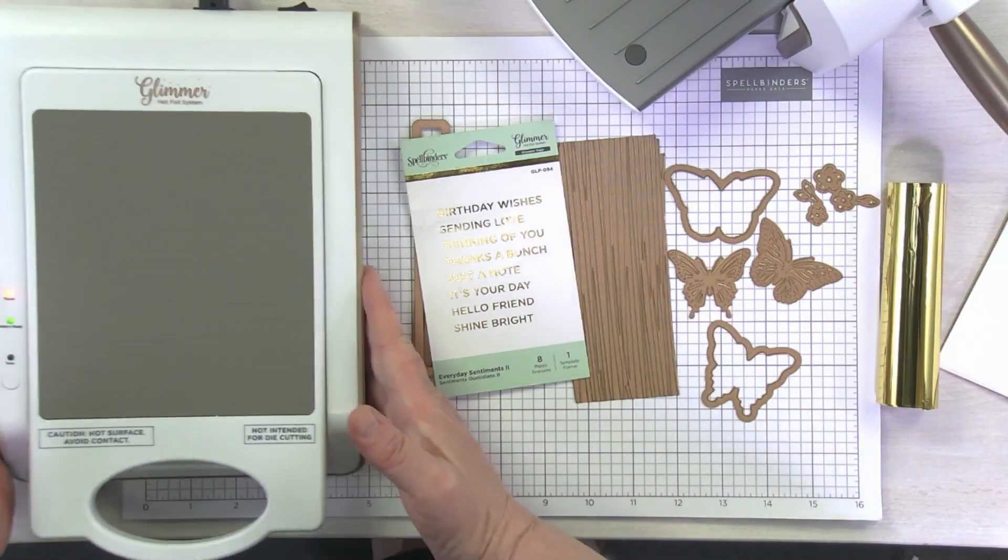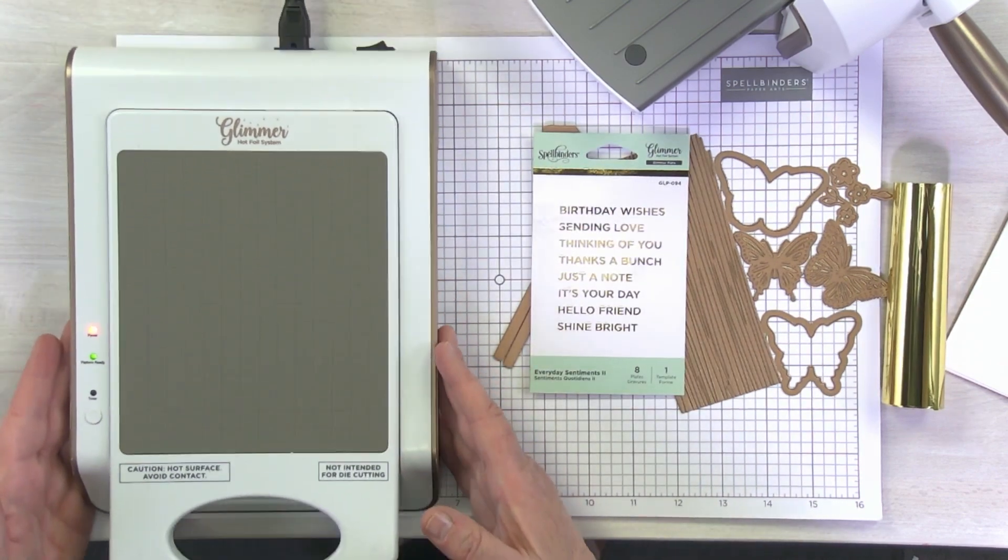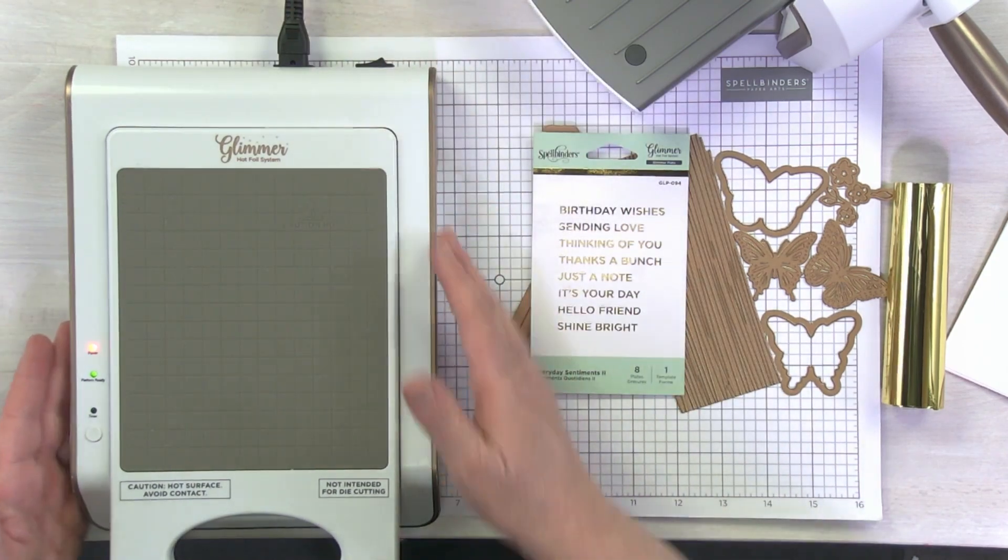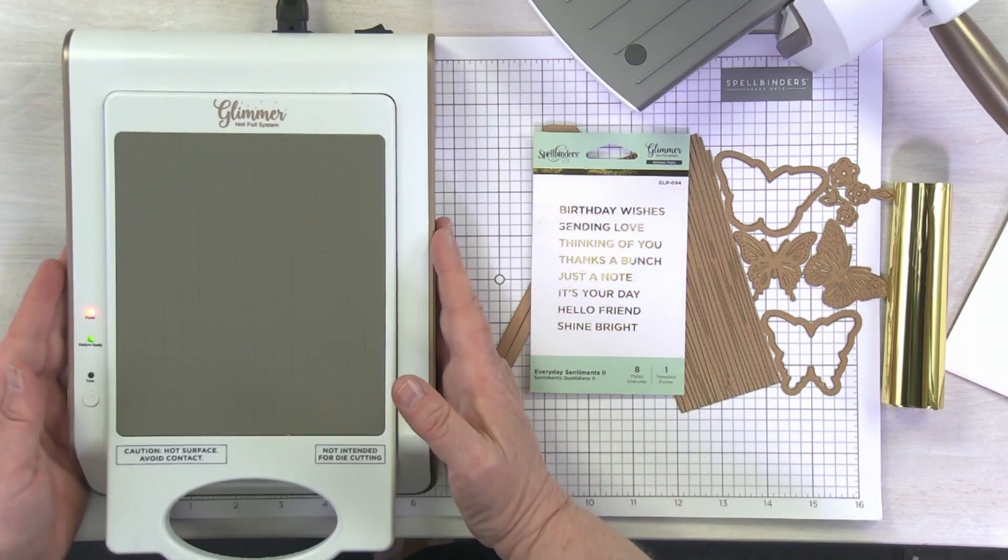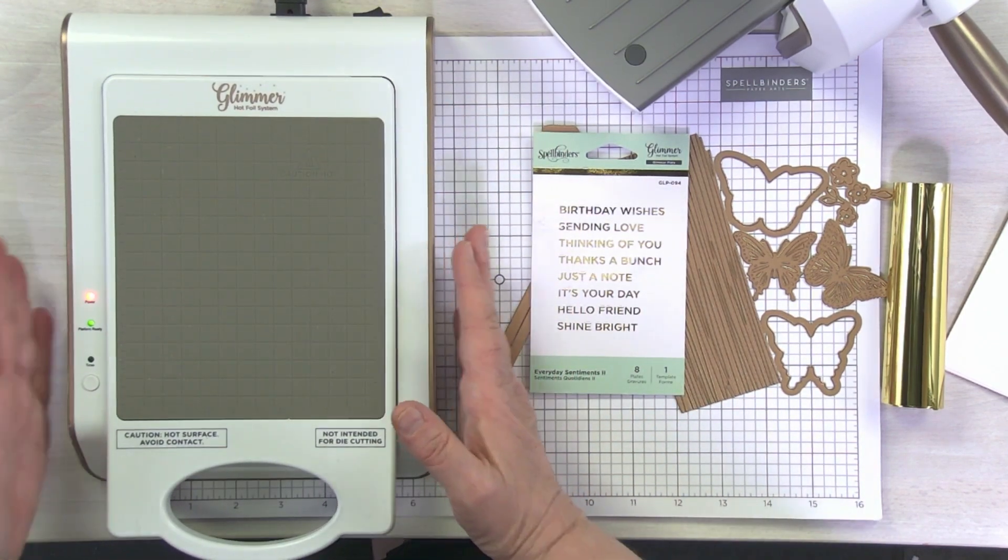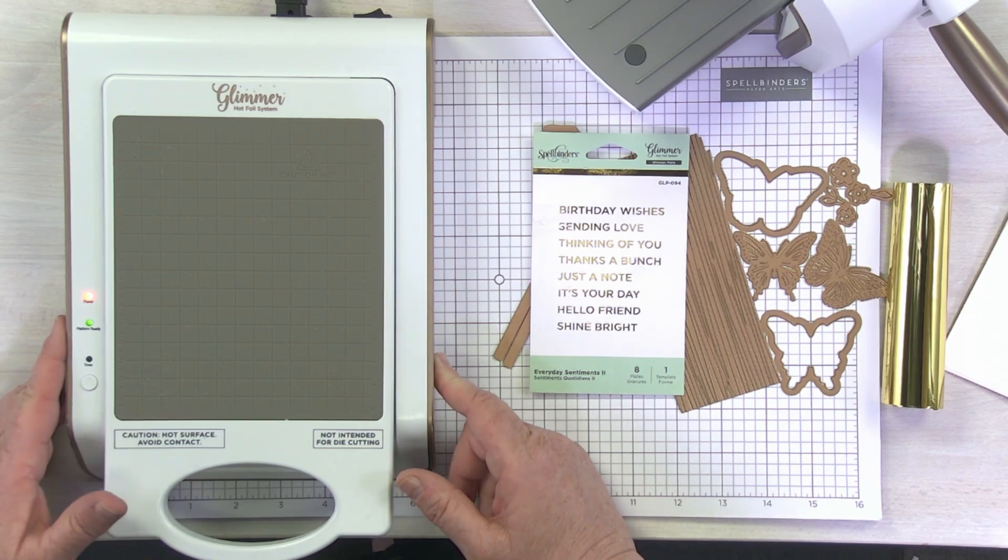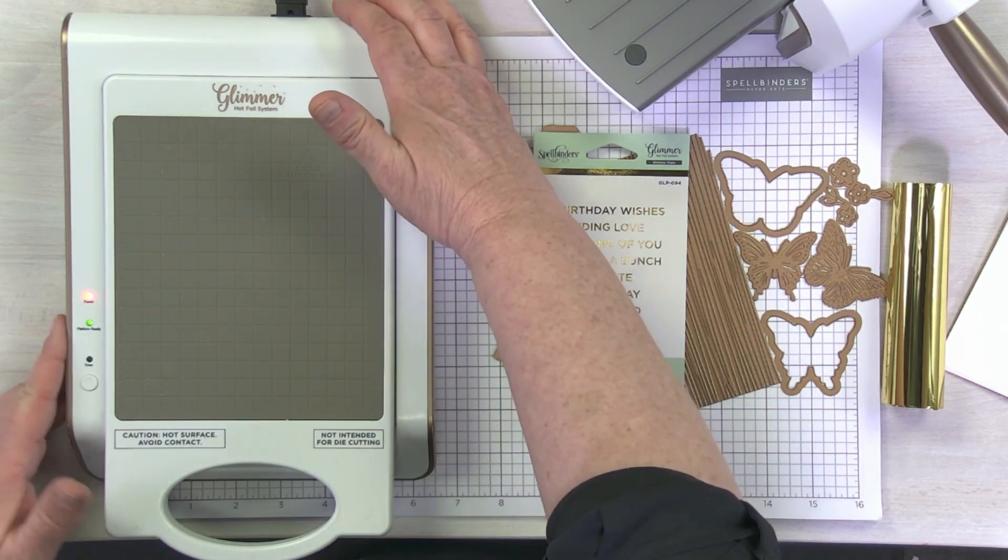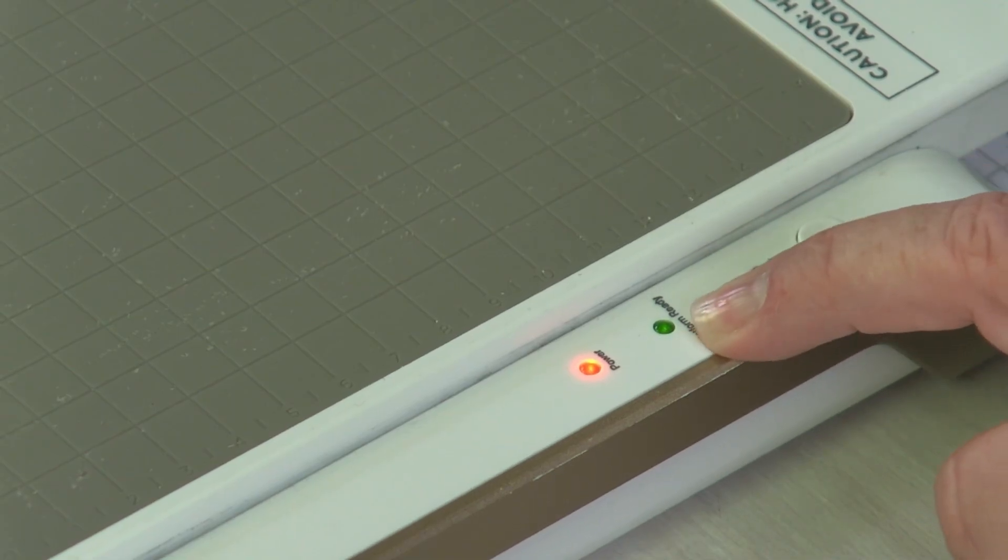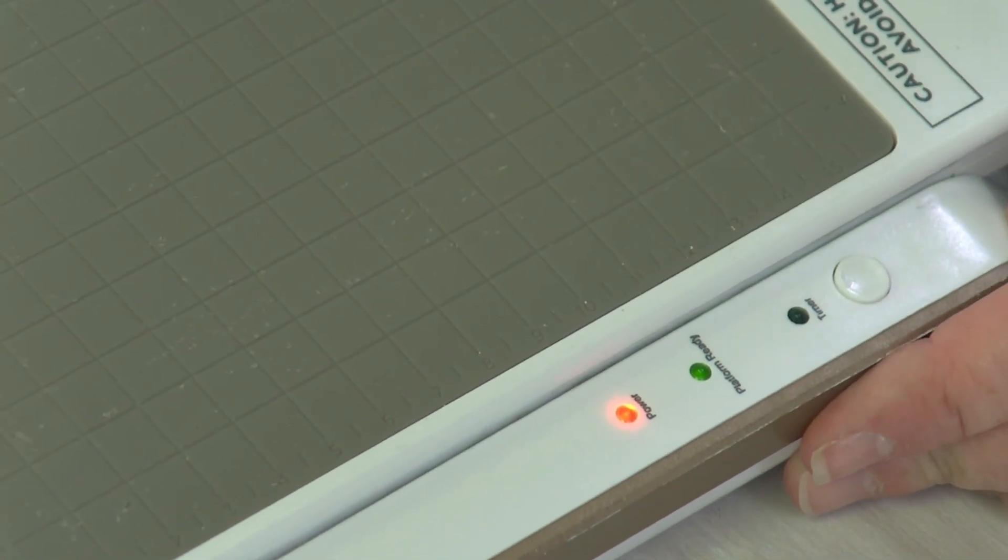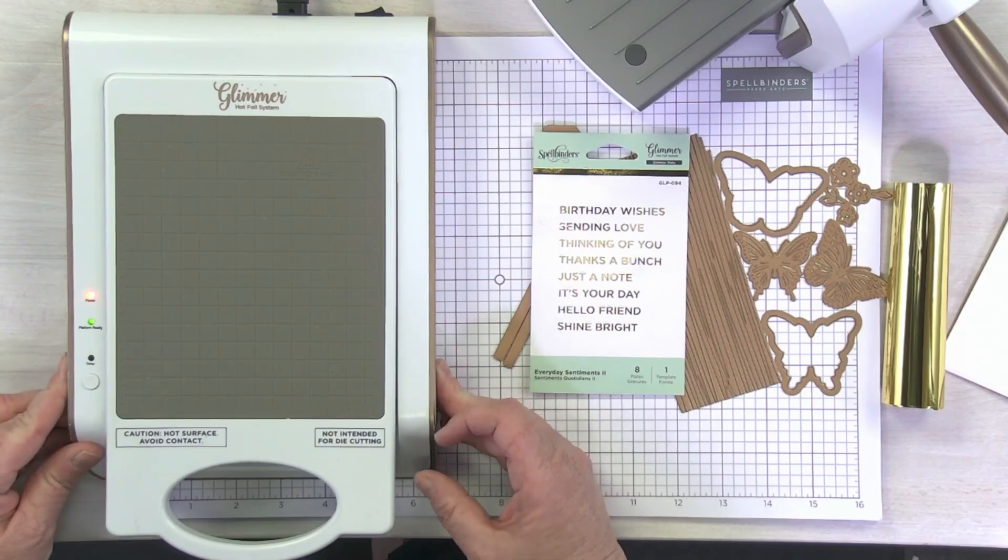I'll set those aside right now and bring in my hot foil system here, my glimmer machine a little bit closer. I have already plugged it in, so I've got my power cord back here plugged in. This is the on-off switch. I'm looking at my indicator lights right here. When I turn my machine on, my red light immediately came on, which indicated I have power. My green light right here says platform ready, so it is ready for my hot foiling.